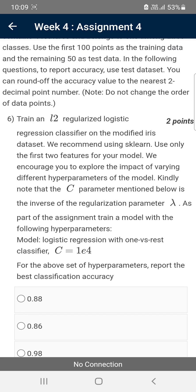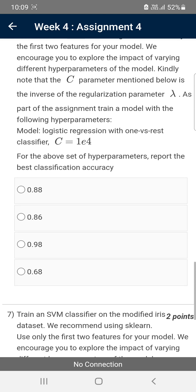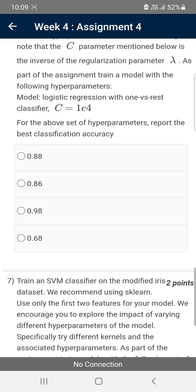For the sixth question, they are asking to train an L2 regularized logistic regression classifier on the modified iris dataset. They give C value 1e4. For the above set of hyperparameters, report the best classification accuracy. For the sixth question, the probable solution is the second option: 0.86.